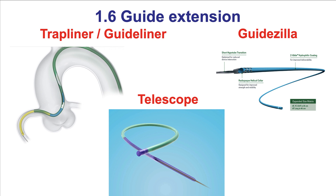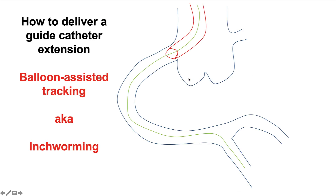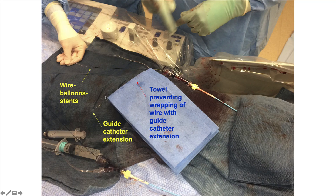The sixth way is to use a guide extension, which essentially uses the same mechanism as deeply seating the guide catheter but is done through a guide catheter extension. Three types are currently available in the U.S.: the GuideLiner/TrapLiner, the Godzilla, and the Telescope. Guide extensions allow deep vessel intubation as well as coaxial alignment. It is best to deliver a guide extension using the inch-worm technique, in which a small balloon is advanced halfway in and halfway outside the guide extension, inflated, then deflated, and while deflating, the guide extension is advanced so it slides over the balloon after being centered within the target coronary vessel. An important part of the technique is to place the guide extension under a towel to prevent wrapping of the push rod with the guide wires.